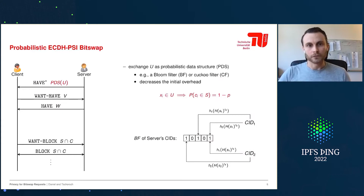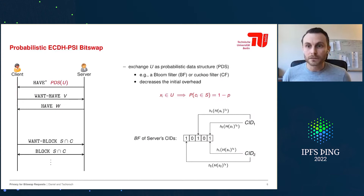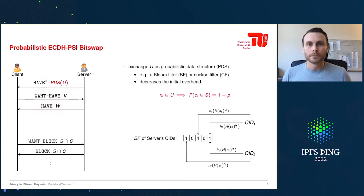Using a bloom filter reduces the amount of data that needs to be transferred quite significantly, and therefore scales much better for large sets. This is still integrable into the BitSwap handshake as sketched before — the half-star inventory message can be piggybacked with the have message, giving us the exact same protocol flow as original BitSwap with no additional RTTs.